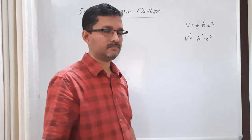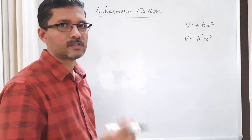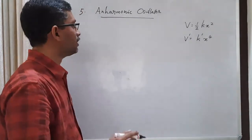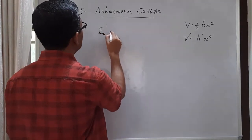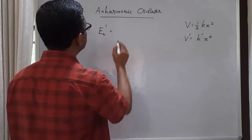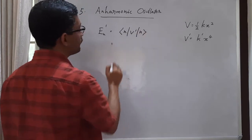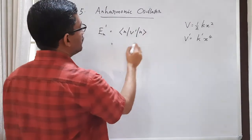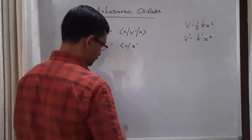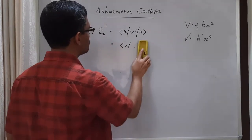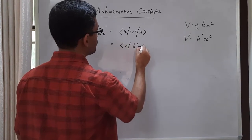Let us try the time-independent perturbation method. Using this, let us try to calculate the first-order correction in energy. Our aim is to calculate the first-order correction Eₙ¹, which is equal to ⟨n|V′|n⟩, where V′ is k′x⁴.